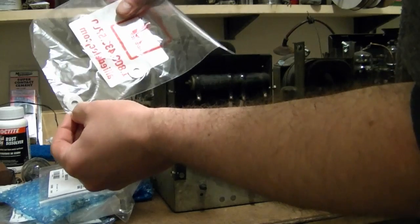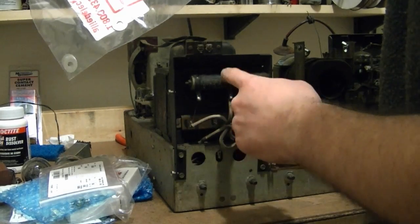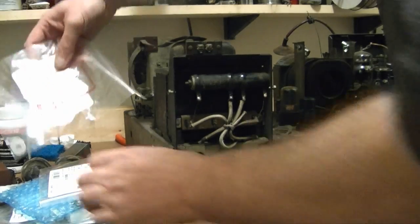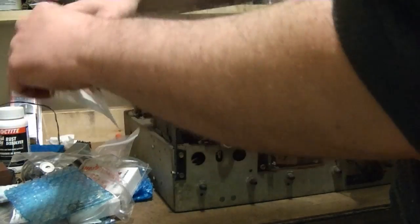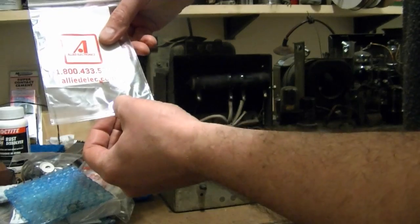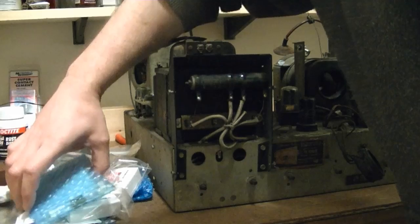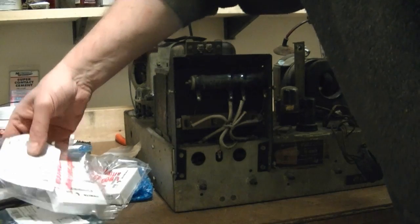So I got some mica washers, that's what goes or will go in between the sections of the new power resistors. Just adds a little protection, insulation. I also got some new end caps. I don't know if I'm going to need them because I can probably reuse the existing ones, but they just cost a few cents.